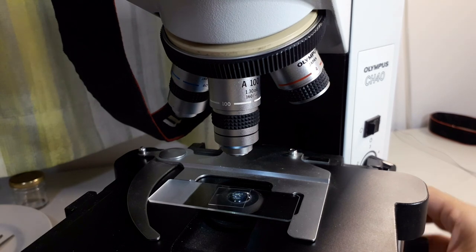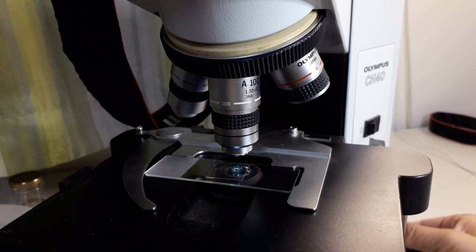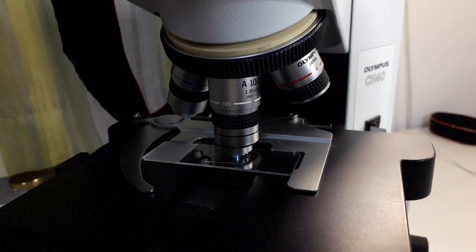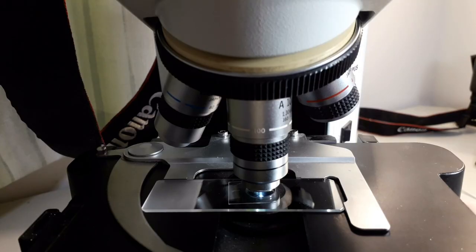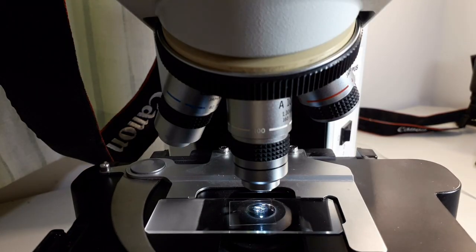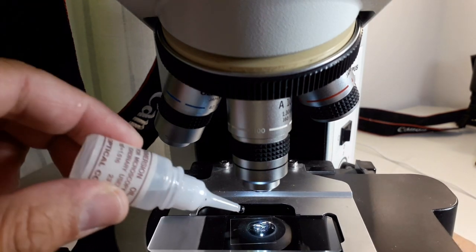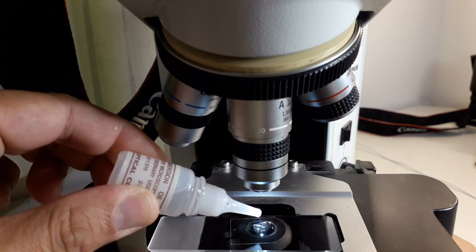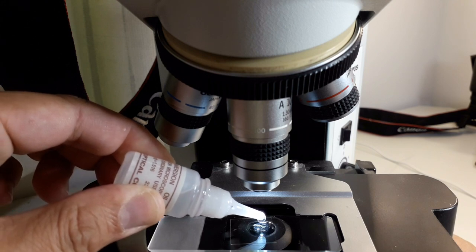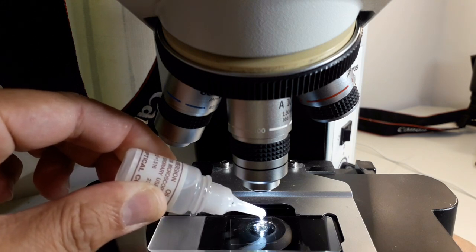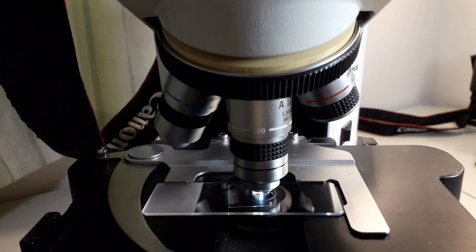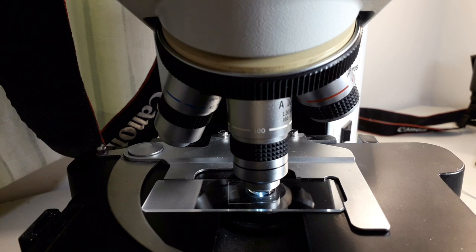So this is now the oil immersion objective in place. When I use the coarse focus knob, I can raise it all the way up and it will not crash because, as I told you before, it has remembered the position of the stage. What I'm going to do now is I'm going to lower the stage, I'm going to add a drop of immersion oil. I like synthetic immersion oil because this one does not solidify over time, and I place a small drop directly on the cover glass. I raise the stage again and that's basically it.